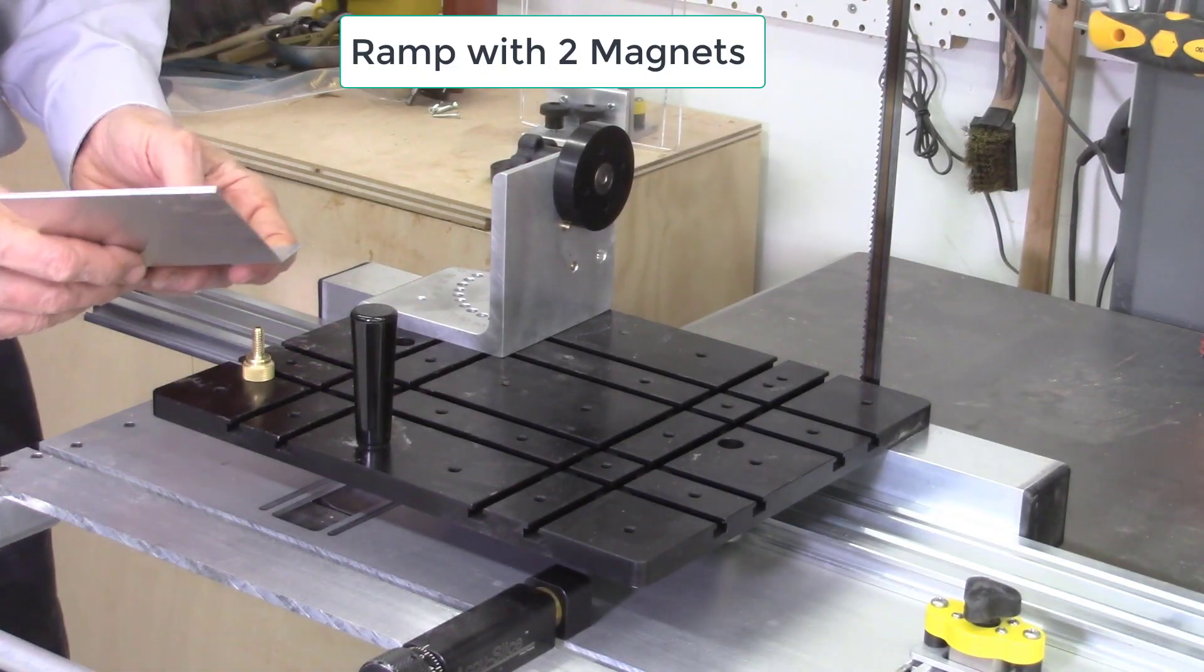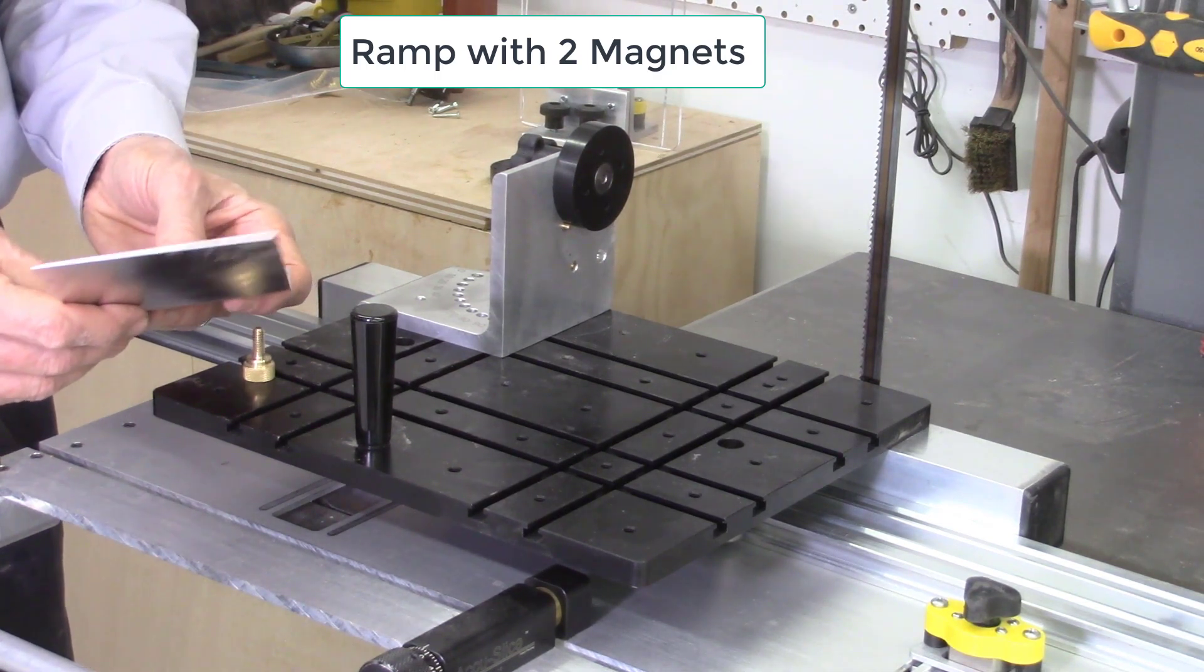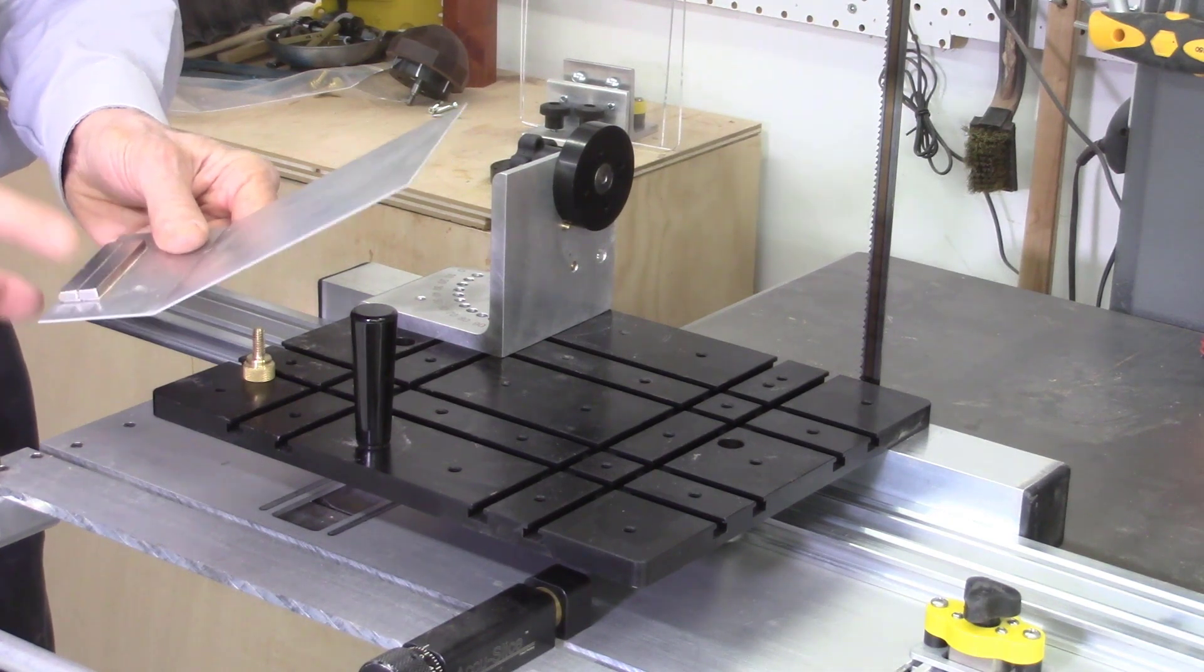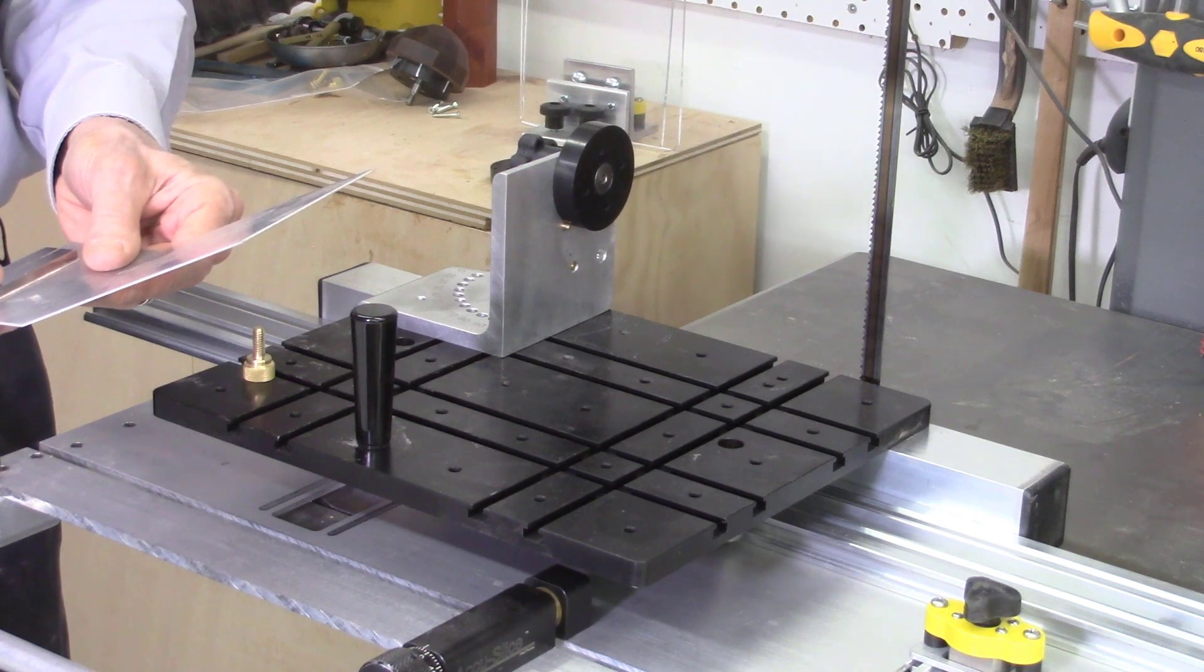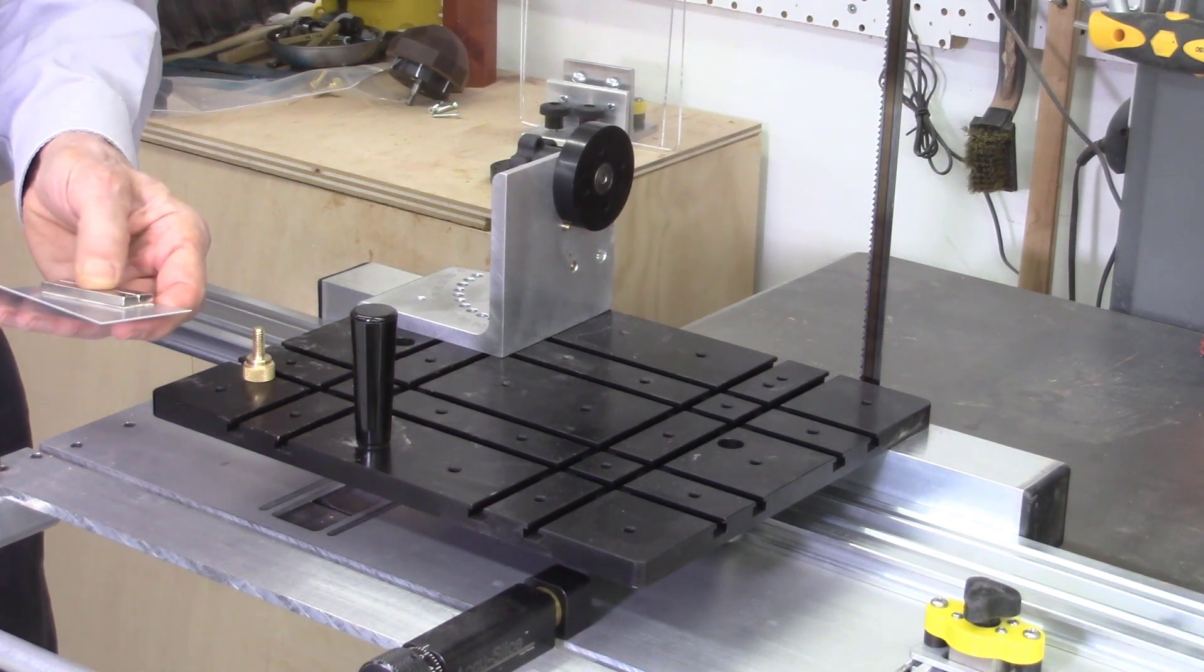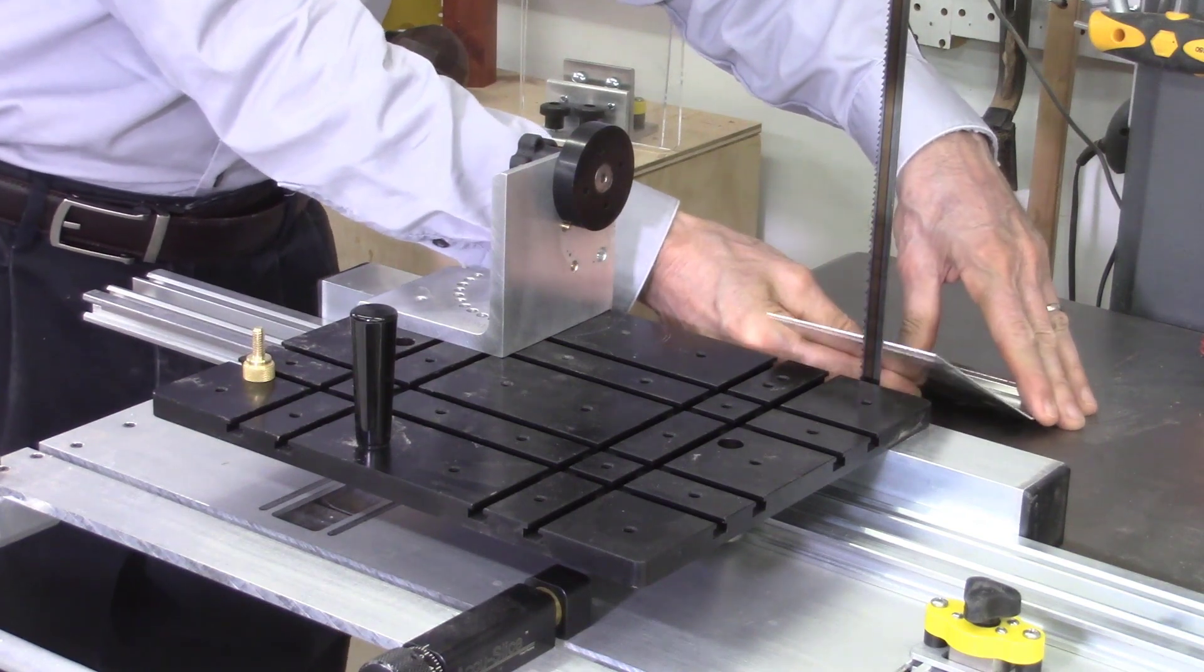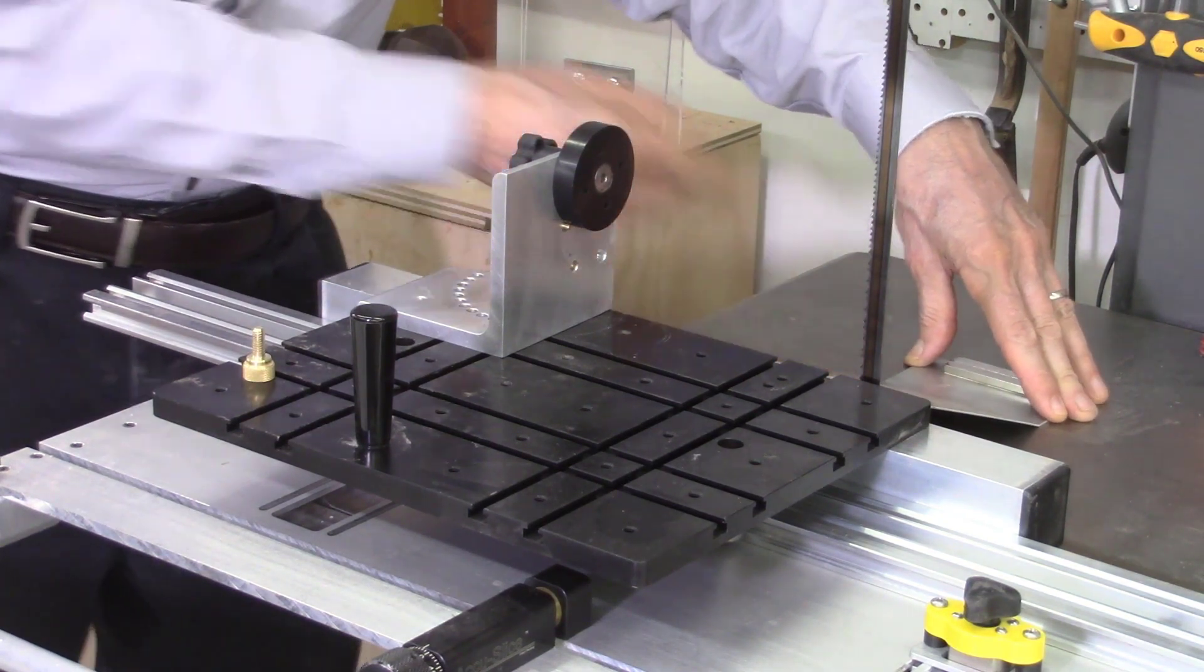The ramp used with the AccuFacet system is the same ramp that we used with the AccuWedge system. We've added a second magnet to provide additional holding power due to the large pieces of wood that you may be cutting off. The purpose of this ramp is to divert the wood pieces away from the bandsaw blade so it won't get jammed up against the blade. We recommend that you position it in the center of the bandsaw blade and about an eighth of an inch away from the blade.